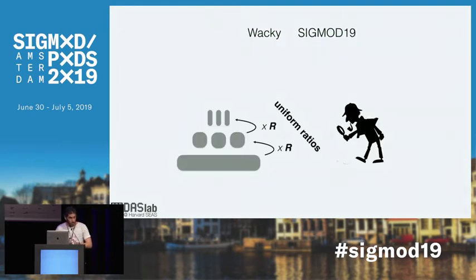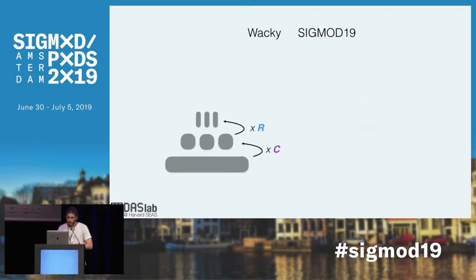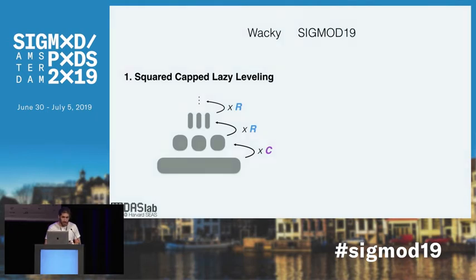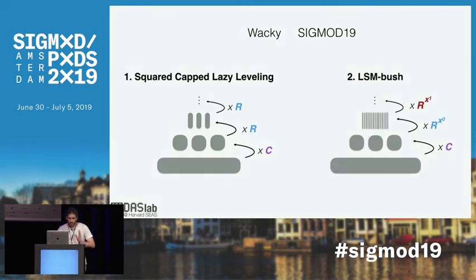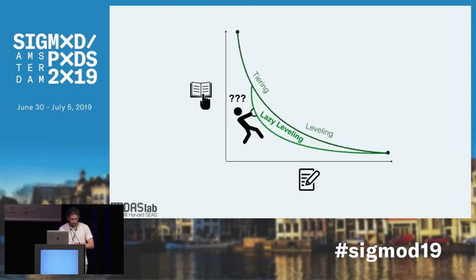With WACKY, we re-examine the fact that all existing LSM-Tree designs have assigned uniform capacity ratios between adjacent levels. We question that assumption and show that by using non-uniform capacity ratios between the different levels, there are still untapped opportunities for improving scalability. We introduce two new schemes: squared capped lazy leveling (SCLL), which assigns a different size ratio just for the largest level, and LSM Bush, which assigns decreasing capacity ratios for smaller levels.